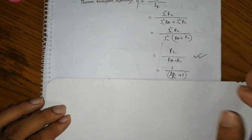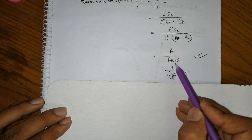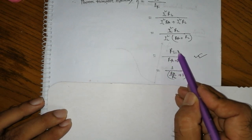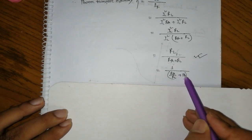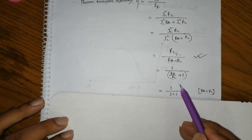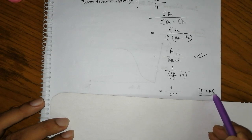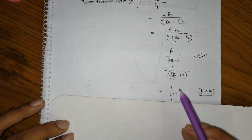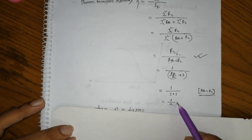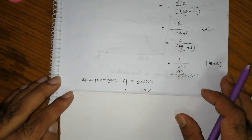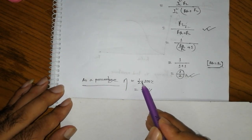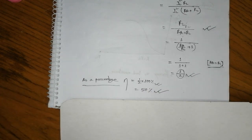We know that at maximum power transfer, RL equals RTS. Substituting RL for RTS in the efficiency formula and simplifying, RTS over RL cancels to one, giving efficiency equals one half, which is 50%. Therefore at maximum power transfer, the efficiency is 50%.